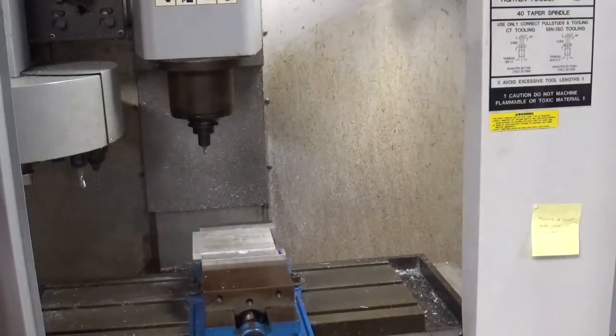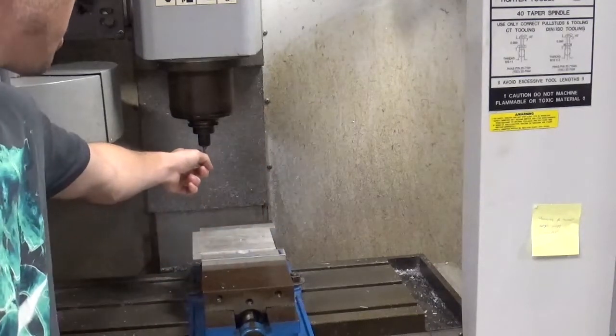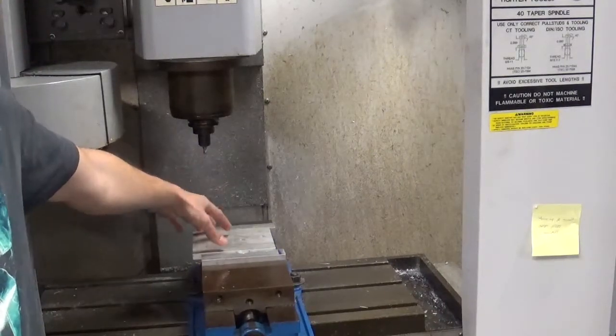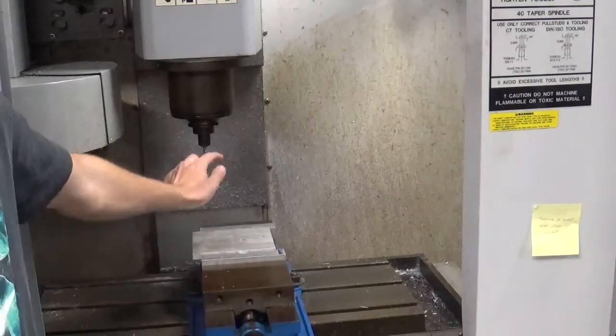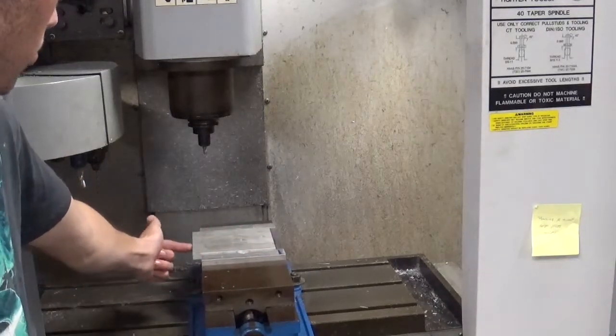All right, here we are on the vertical mill. We'll be using the quarter inch end mill. I've already done the tool height compensation for the tool. My z0 is on top of my part.